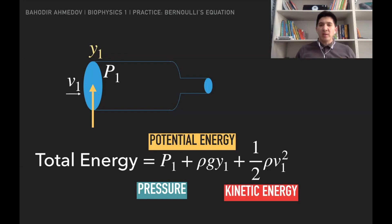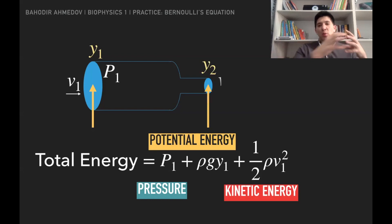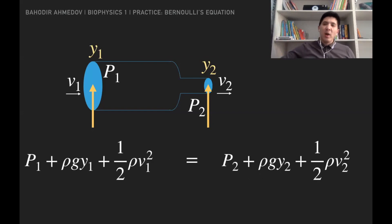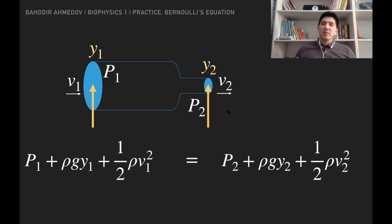Bernoulli's equation tells us that this total energy is conserved — unchanged overall in any area of the pipe. If you cut the pipe at another point where there is a different velocity, pressure, or height, the total energy is going to be the same. This is what Bernoulli's equation tells us.